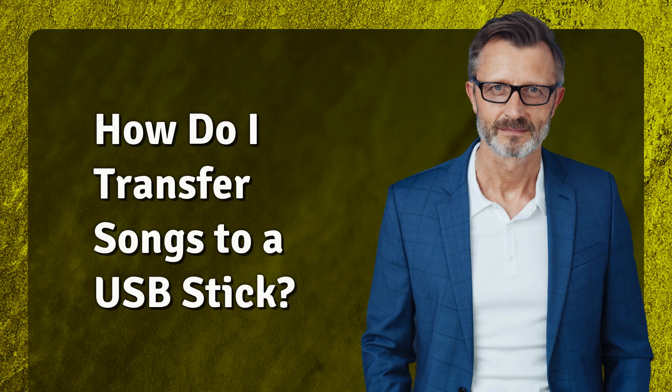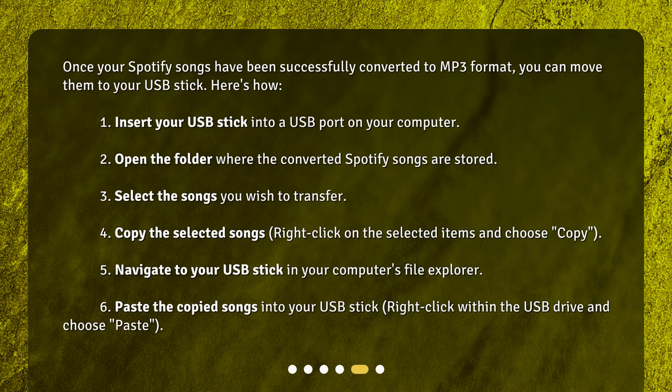How do I transfer songs to a USB stick? Once your Spotify songs have been successfully converted to MP3 format, you can move them to your USB stick. Here's how: 1. Insert your USB stick into a USB port on your computer. 2. Open the folder where the converted Spotify songs are stored. 3. Select the songs you wish to transfer. 4. Copy the selected songs — right-click on the selected items and choose Copy. 5. Navigate to your USB stick in your computer's file explorer. 6. Paste the copied songs into your USB stick — right-click within the USB drive and choose Paste.